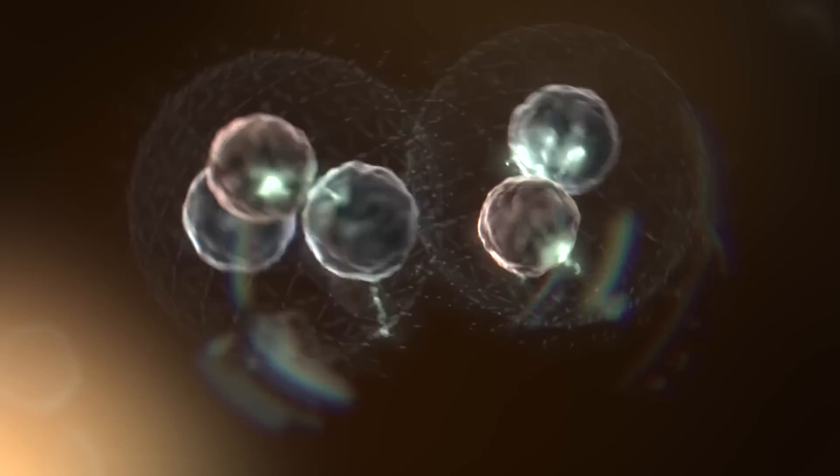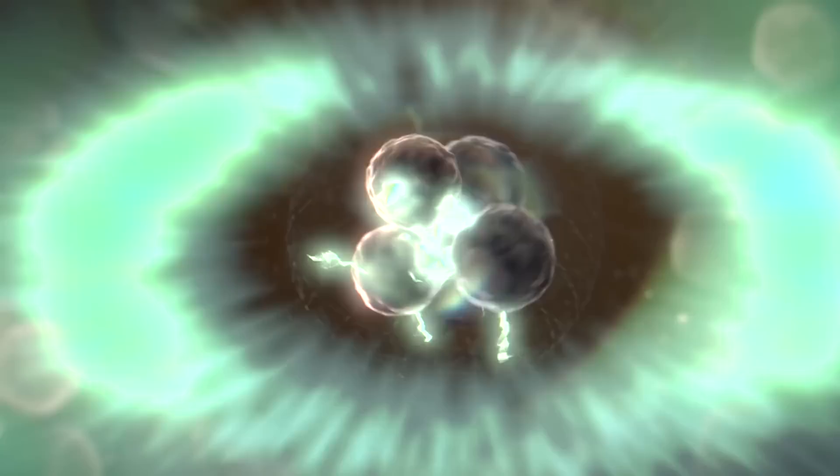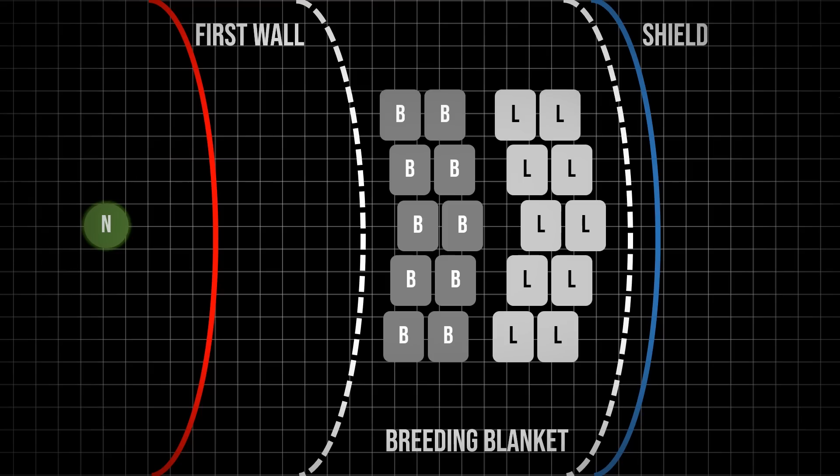In an ideal world, the fusion reaction between the deuterium and tritium takes place and shoots off a neutron. This neutron flies through the first wall, which is a protective barrier to protect the tritium breeding blanket from the hot plasma, and then the neutron reacts with some beryllium. This reaction with beryllium causes the one neutron to turn into two neutrons, which then fly out to react with lithium and produce helium and tritium.